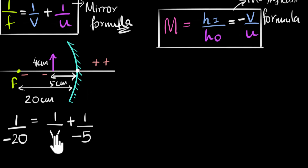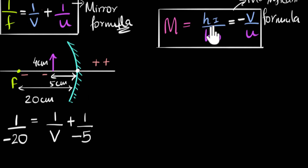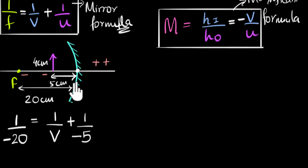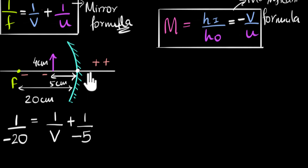Once we get the value of v, we can plug it into the magnification equation and calculate the height of the image. If the height of the image turns out to be positive, it's above the principal axis — meaning it's erect and a virtual image. If it's negative, it's below the principal axis, meaning it's inverted and a real image. So just by using signs, we can understand all the properties of the image.